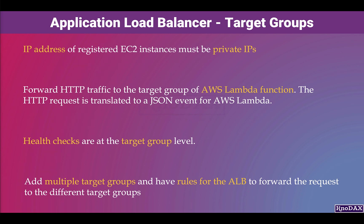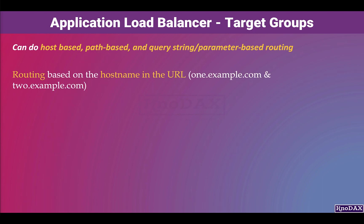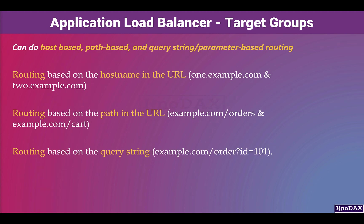Application Load Balancer can do host-based, path-based, and query string or parameter-based routing. For example, you can do routing based on the host name in the URL, such as 1.example.com and 2.example.com. Or you can set routing based on the path in the URL, for example, example.com/orders and example.com/cart. Or routing based on the query string, for example, example.com/order?ID=101.